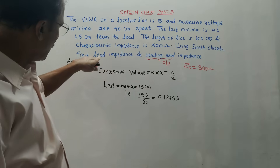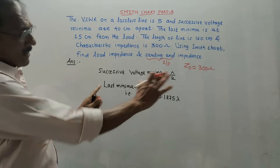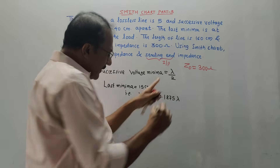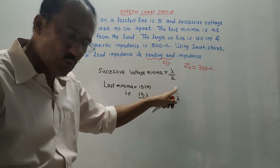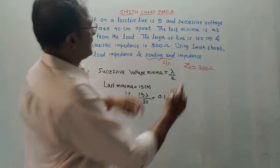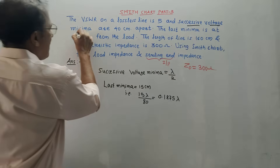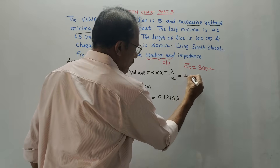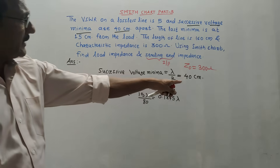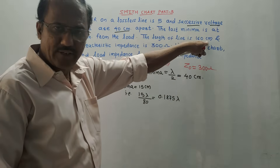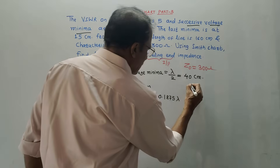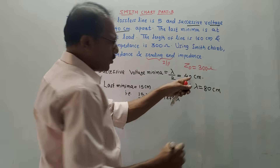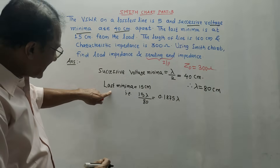One basic concept: successive voltage minima are always separated by a distance of lambda/2. The given distance for successive voltage minima is 40 centimeters, so lambda/2 = 40 cm. This gives lambda = 80 centimeters. There is no need to convert to meters since the length is also given in centimeters.